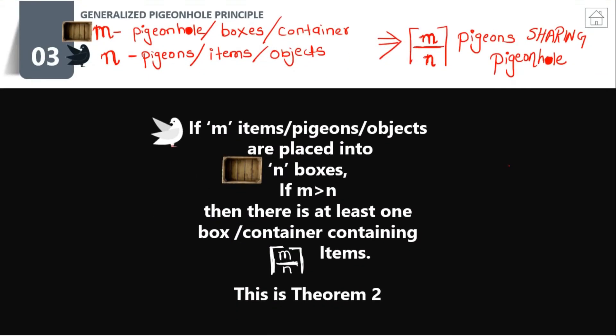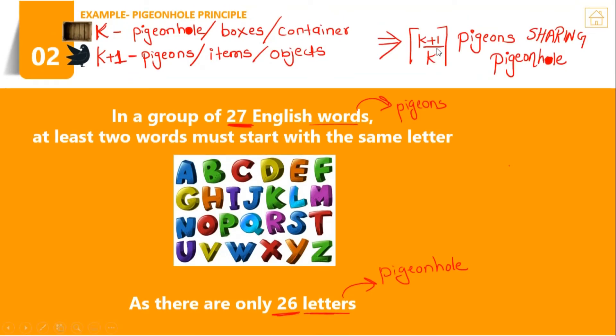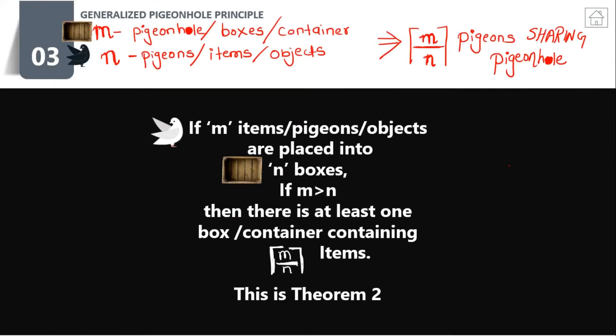Now, what if our k+1 value is very large? In that case, we go for the generalized pigeonhole principle, which is Theorem 2. If you have m pigeonholes or boxes or containers and n pigeons or items or objects, then there must be at least m divided by n pigeons sharing pigeonholes.